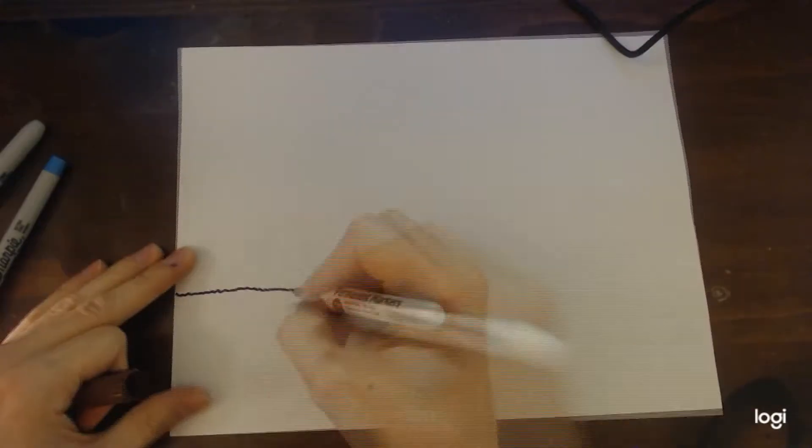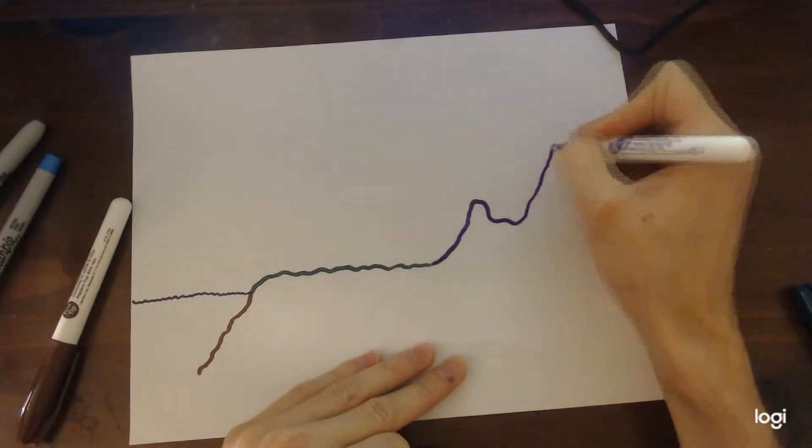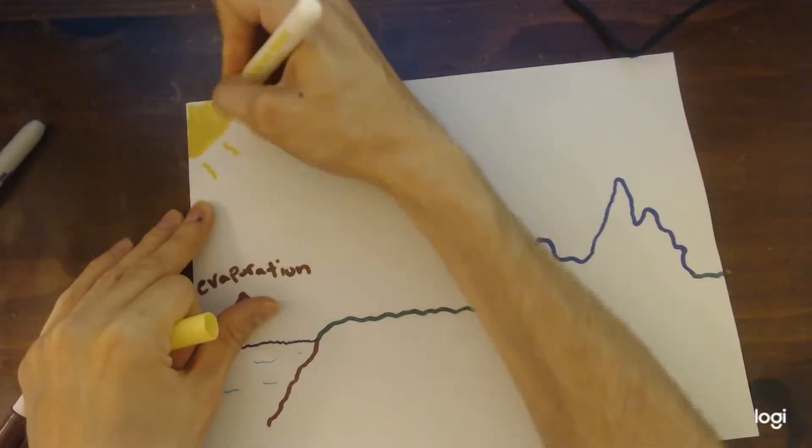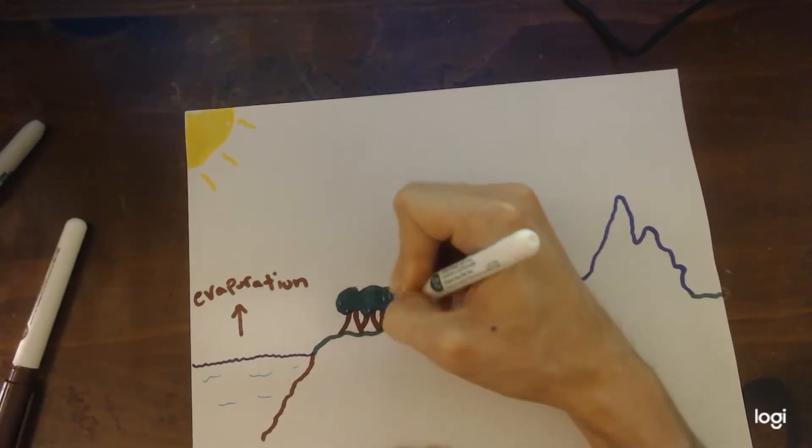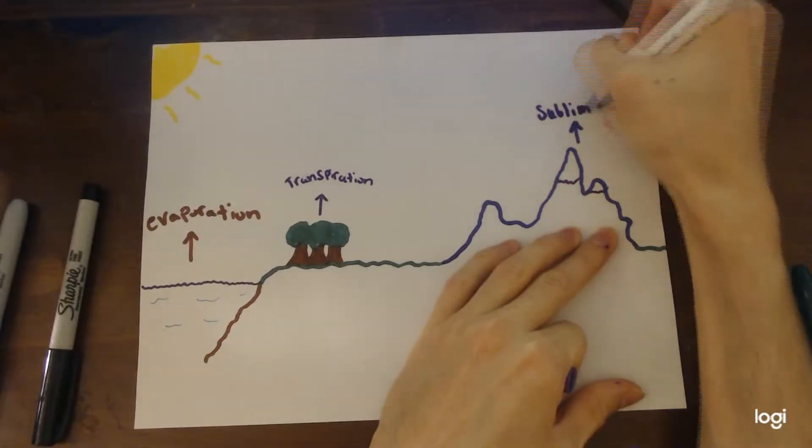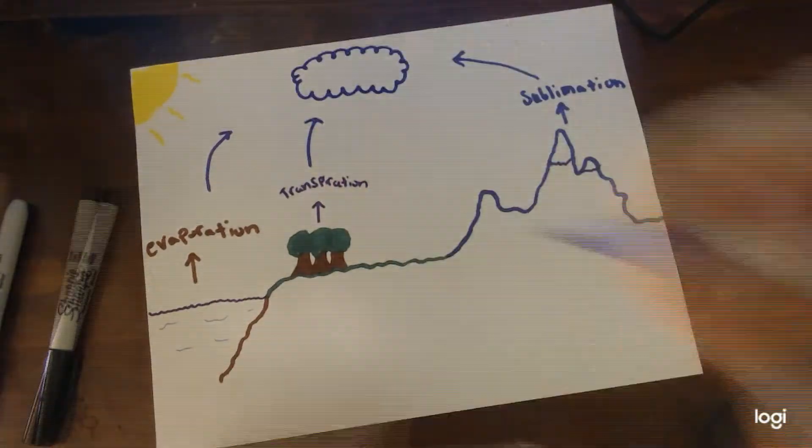First, let's take a look at the water cycle. Water for a river begins in a few places from all over through the process of evaporation, transpiration, and sublimation. These form clouds in the sky which eventually get too dense and have to drop all of their water in the form of precipitation.